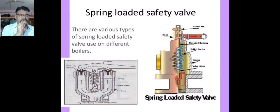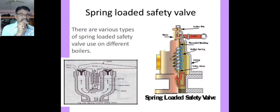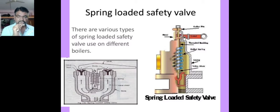When the pressure of steam exceeds the normal pressure, the valve along with the weights and cover plate is lifted up from its seat, allowing steam to escape through the discharge pipe outside the boiler house. That is the working of the dead weight safety valve.